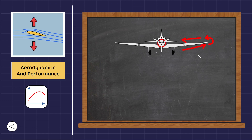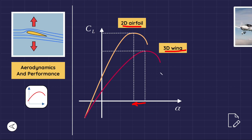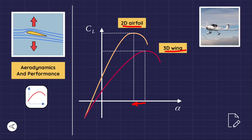A high aspect ratio wing has a greater wingspan, which decreases the influence of the wing tip vortex. As the aspect ratio increases, the lift curve slope increases toward the maximum theoretical limit of 2π. Also, the wing stall angle decreases toward the airfoil stall angle, which is why the horizontal tail is designed with a lower aspect ratio than the wing — to allow for a higher tail stall angle so the tail stalls after the wing, enabling safe recovery.